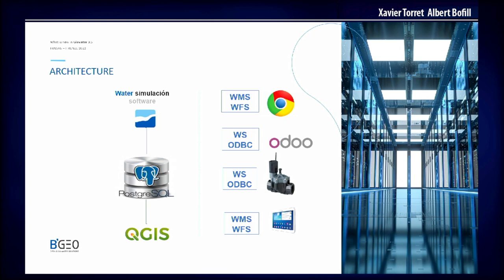What is Giswater? It's a software based on QGIS and PostgreSQL, which has a huge plugin and a huge template on PostgreSQL in order to connect both with EPANET and a stormwater management model, to make hydraulic modeling for water supply systems, sewage systems, and urban drainage. At the same time, it enables a good environment for asset management.